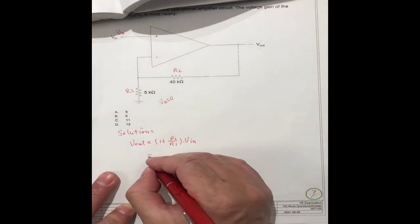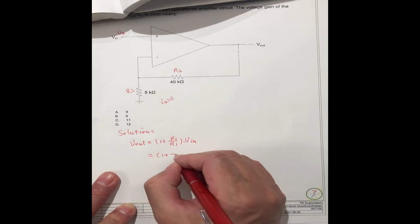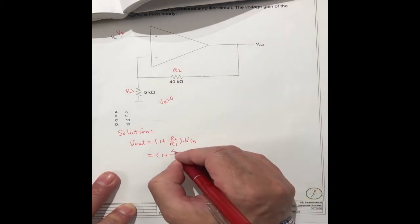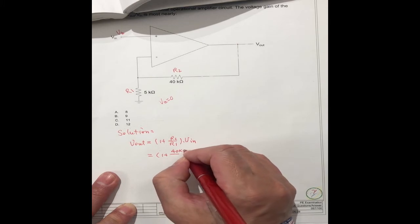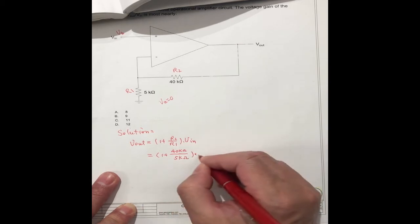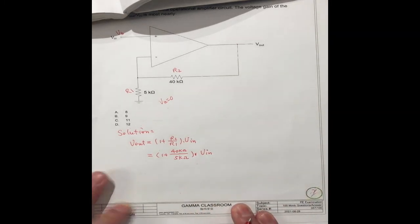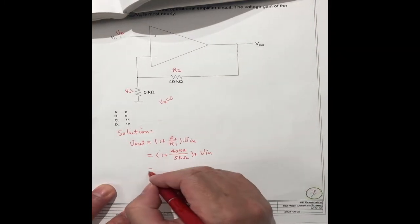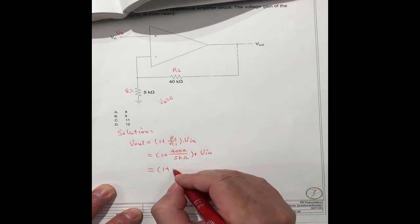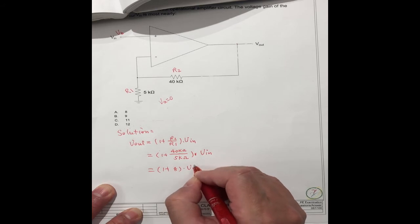We know the R1, R2 is 40K, R1 is 5K. We know this is input. So we can get the number, 1 plus 40 divided by 5 is 8, times V input.